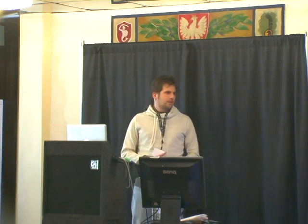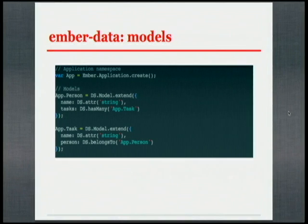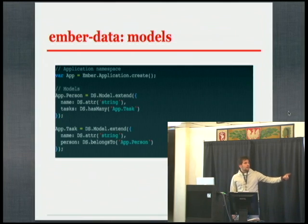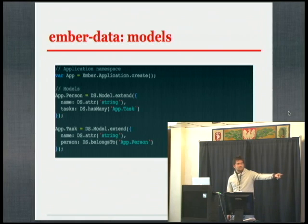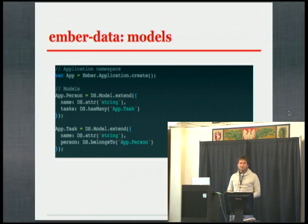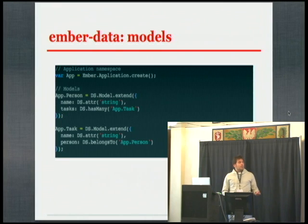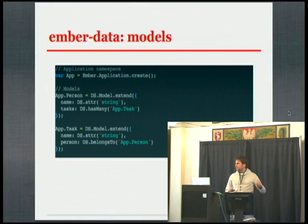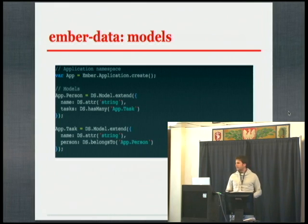These are the Ember models. If you remember the slide with the Django models, it's a direct translation. I'm defining a namespace, and then I have my model Person and my model Task. Notice the DS.attr string — I have string, number, date, boolean. It feels more like Django. The coolest part by far is that it manages associations. You can define hasMany — like your models ManyToManyField — and belongsTo, which is the ForeignKey field. That's all you need to tell Ember how your models are related in the backend; it's going to do everything with that information.